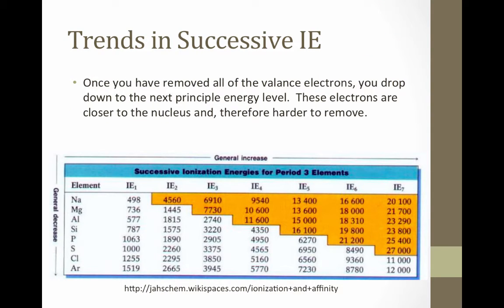Here's a chart showing some successive ionization energies for several elements. The yellow or orange box represents where we make the jump from one principal energy level to the next. Notice that in each case there's a significant jump between the ionization energy before and after we've jumped to the next principal energy level.